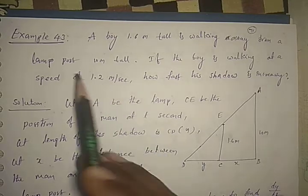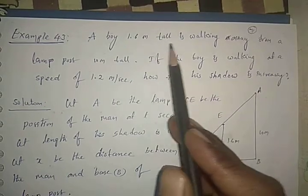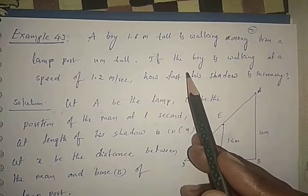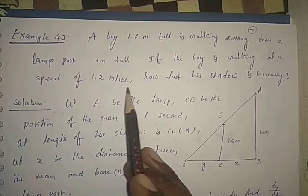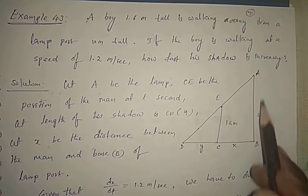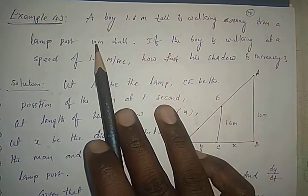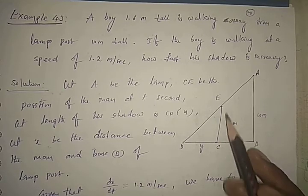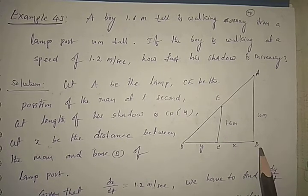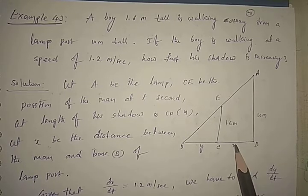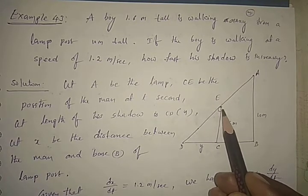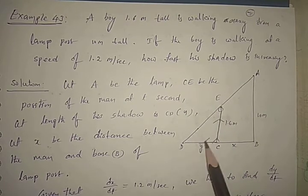Now we will see one more problem. Example 43: A boy 1.6 meters tall is walking away from a lamp post 10 meters tall. If the boy is walking at the speed of 1.2 meters per second, how fast does his shadow increase? AB is the pole with length 10 meters. EC is the position of the person with height 1.6 meters. Let the distance between the person and the base of the street light be X, and the length of the shadow be Y.